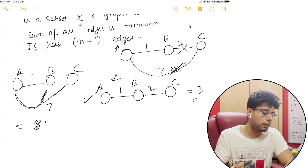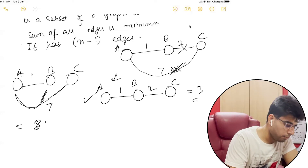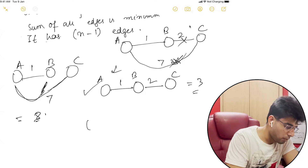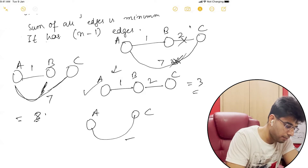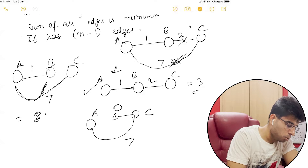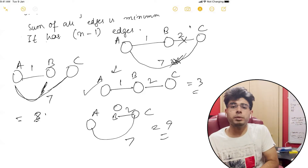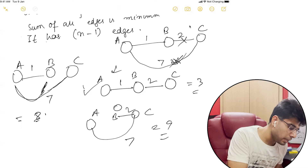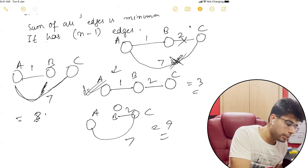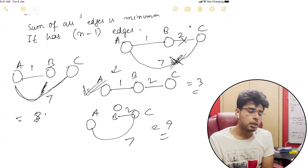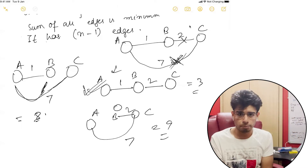Another way would have been to simply keep A to C at cost 7 and keep B to C at cost 2. In that case, the cost would come out to be 9, which is again not optimal. So we see that removing the edge between A and C with cost 7 is the most optimal choice.